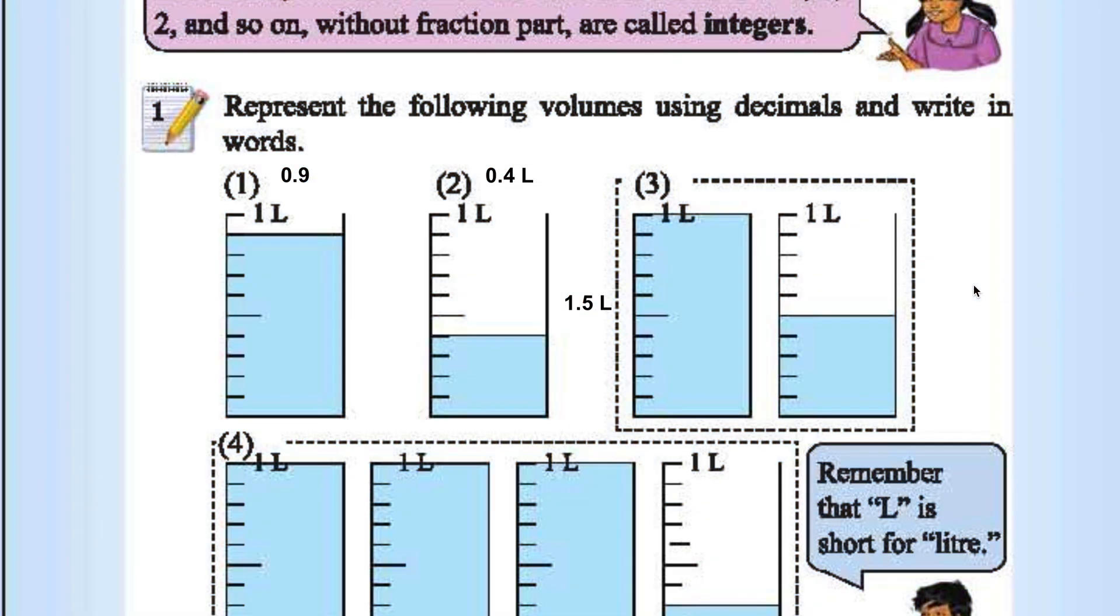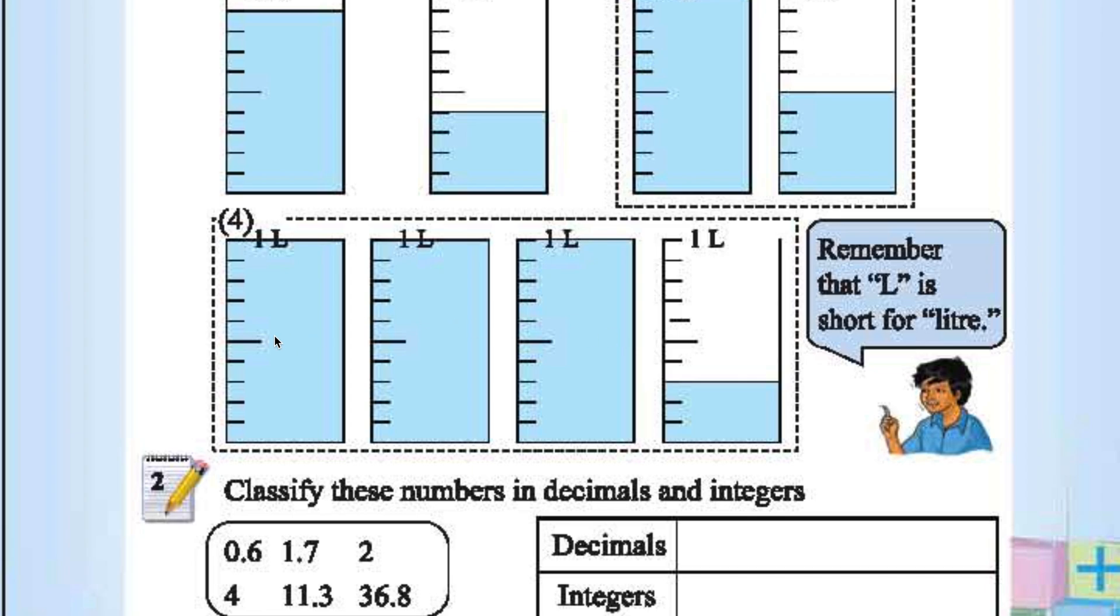What about fourth one? Fourth one. 1, 2, 3 plus 0.3. So 3.3 liter. Here L stands for liter.